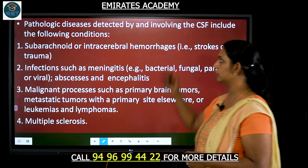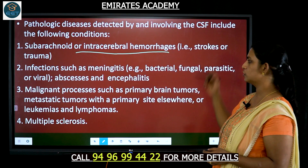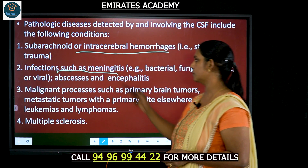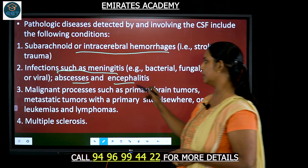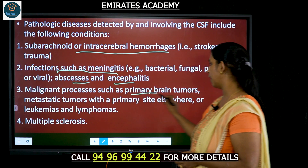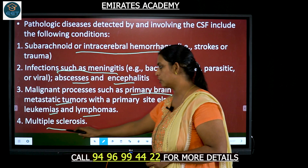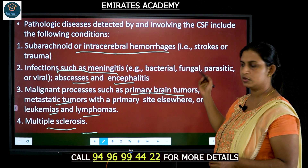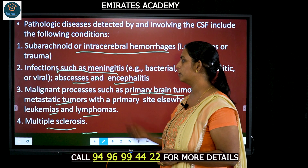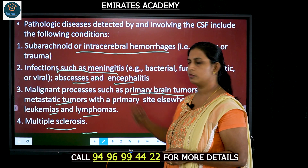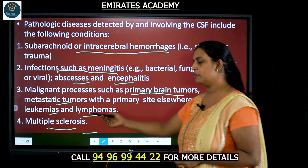The pathological diseases associated with CSF include subarachnoid or intracellular hemorrhage, such as stroke or trauma. There will also be infections — bacterial, fungal, parasitic, or viral — such as meningitis, as well as abscess and encephalitis. Malignant processes include primary brain tumors, metastatic tumors, leukemias, lymphomas, and multiple sclerosis.